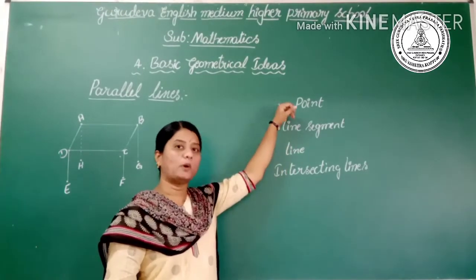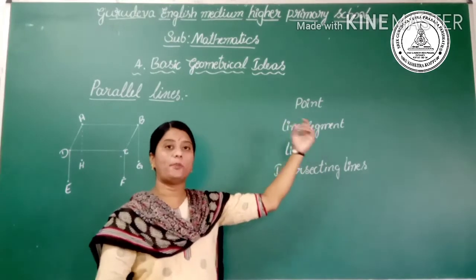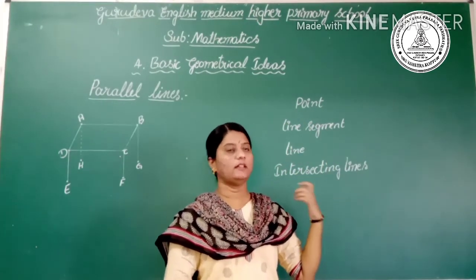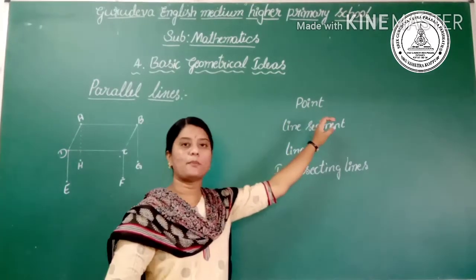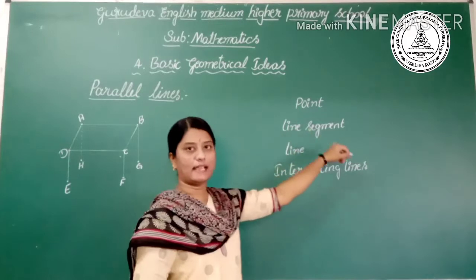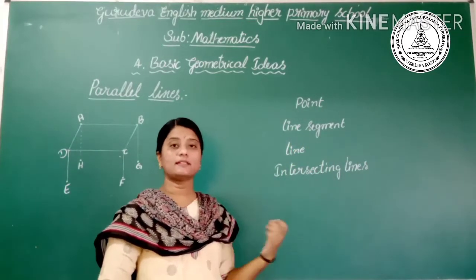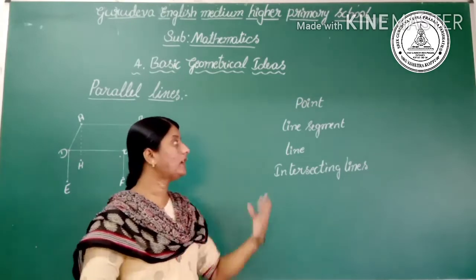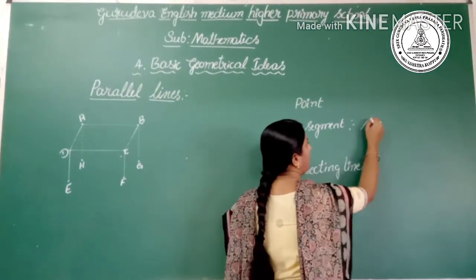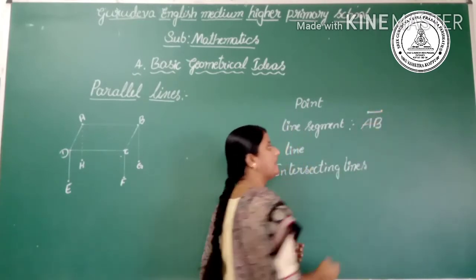What do you mean by a point? A point determines a location and we denote a point with single capital letters. We have also seen some models for the point. The next is line segment. A line segment has two ends, it has definite length, and we denote the line segment AB as line segment AB.